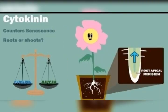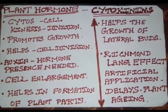Cytokinin is the plant hormone which helps in cell enlargement and helps in the formation of various plant parts.